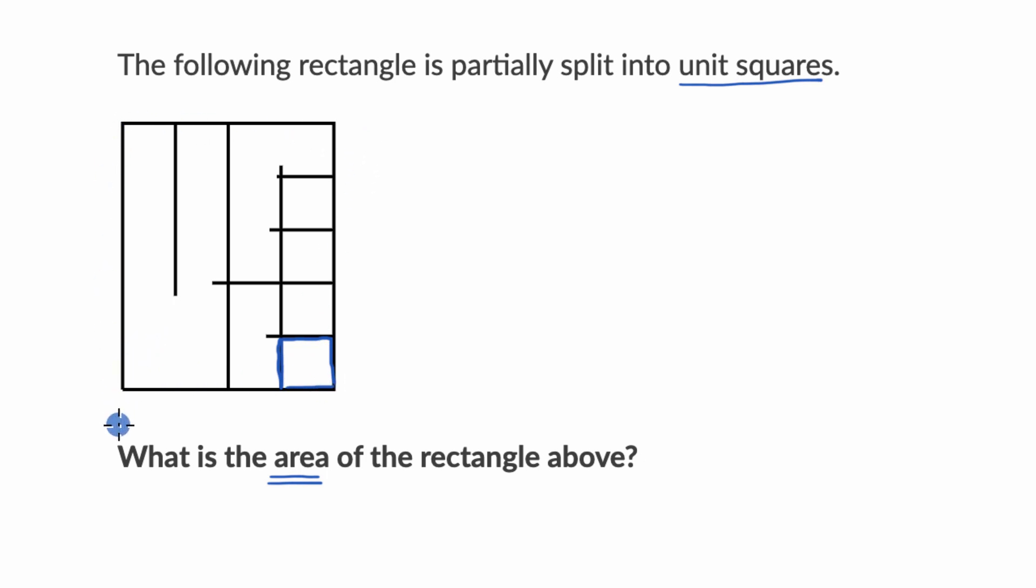So how could we do that? Well, what we could do is we could keep drawing these lines that have already been partially drawn, and we can then see how many of these unit squares we have. So let's just finish drawing these lines here. I'll try to draw it as neatly as I can. So we have that, we have that like there, and then let me complete this one, and let me complete that one. I'm almost done, that one, and then that one.